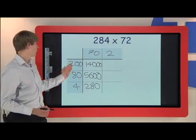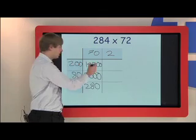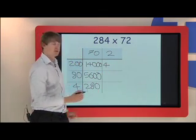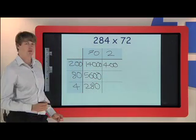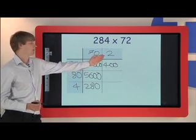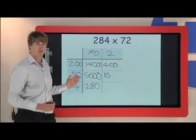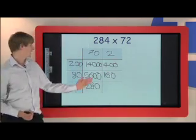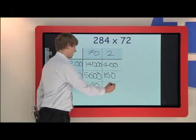And then we have 200 times 2 for this box which is 2 times 2 is 4, and then 2 more zeros to give us a total of 400 in that box. And then we have 80 times 2, 2 times 8 is 16, and then don't forget the 0. And lastly we have 2 times 4 to give us 8.